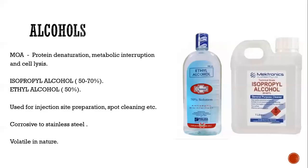The first group is alcohols. The mechanism of action is protein denaturation, metabolic interruption, and cell lysis. Most common examples are isopropyl alcohol and ethyl alcohol, which are used for injection site preparation and spot cleaning. They are corrosive to stainless steel and very volatile in nature, so must be used with caution.